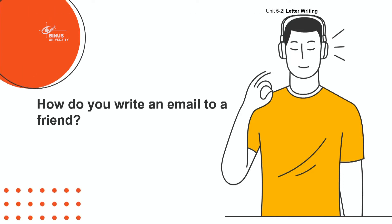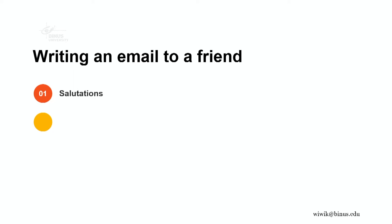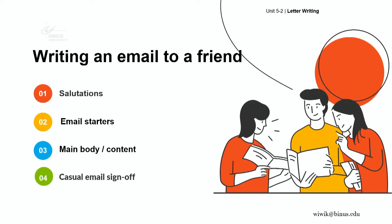How do you write an email to a friend? There are some points that you have to consider. The first one is salutations. The second one is how you start your email. Then the main body or content. And of course, you have to sign off with some casual expressions.